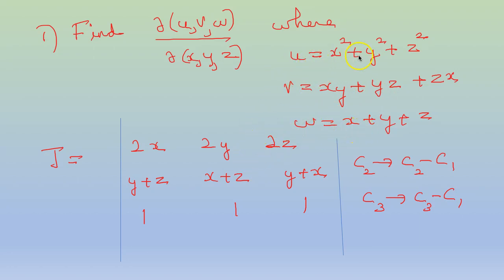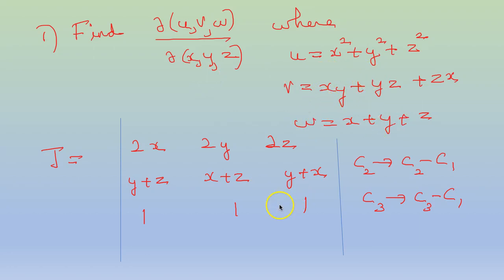Similarly, del u by del y is 2y, del v by del y will be x plus z, del w by del y is 1. And del u by del z is 2z, del v by del z is y plus x, del w by del z is 1.